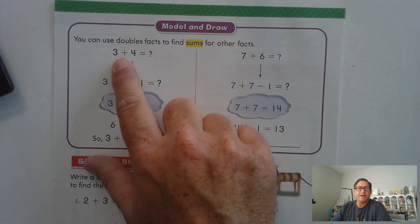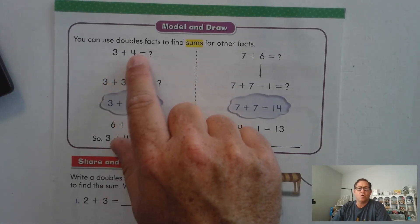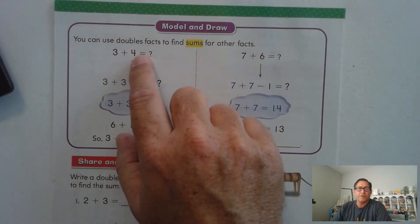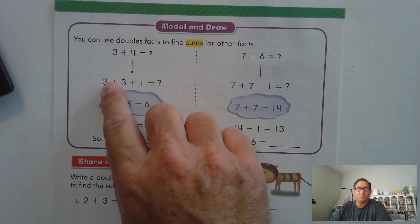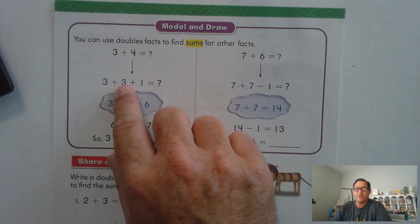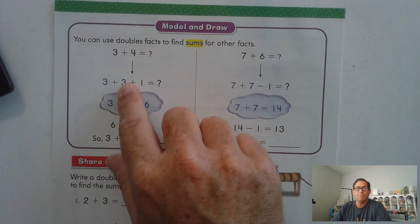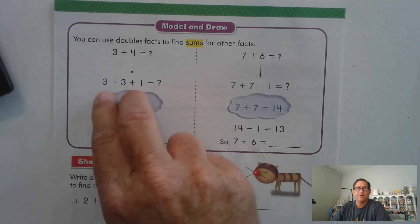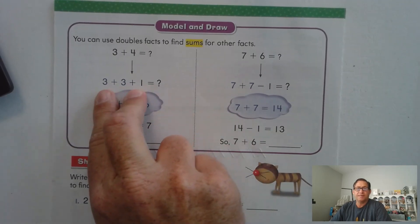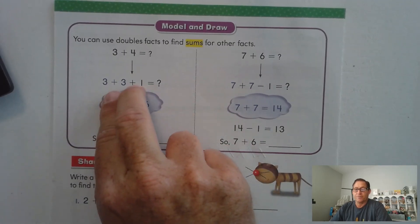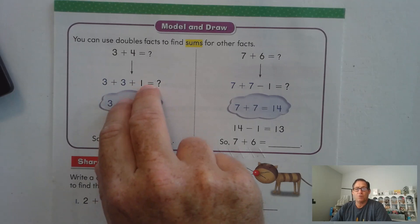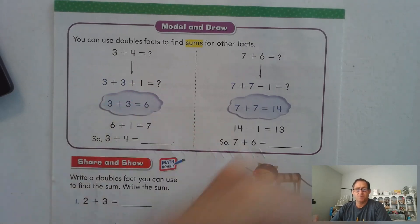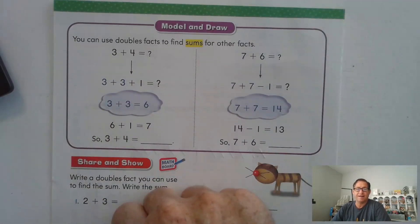You can use double facts to find sums for other facts. For instance, 3 plus 4 equals what? Well, 3 plus 4 is close to 3 plus 3, right? 4 is just 1 more than 3. So we could use the double fact 3 plus 3, which is 6, plus 1 more to get 7.